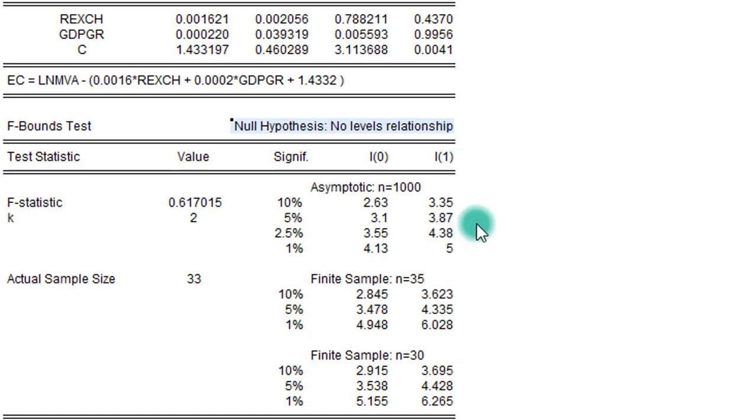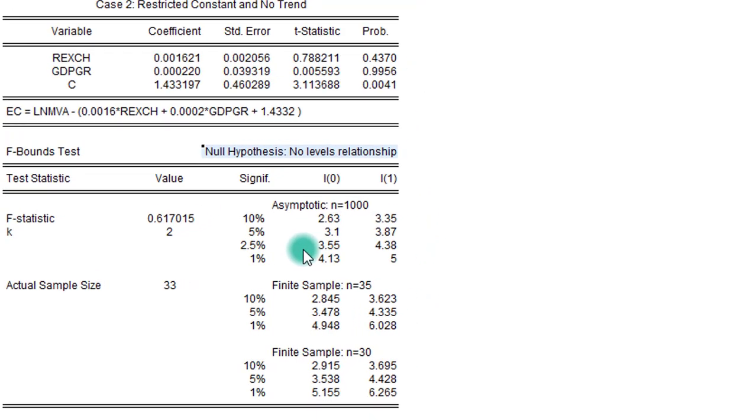So among log of MVA, real exchange rates, and GDP growth rates, there is no cointegration. There is no long run relationship, so we cannot reject the null hypothesis.